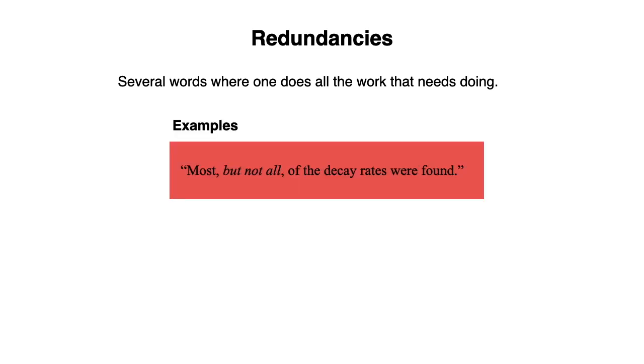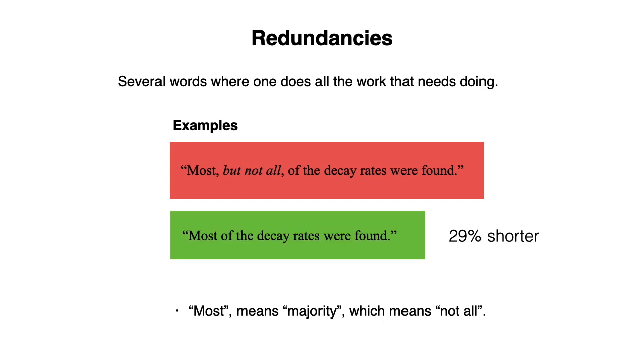What about this example? Most, but not all, of the decay rates were found. Most means majority, which means not all, so it would be shorter to just say most of the decay rates were found.